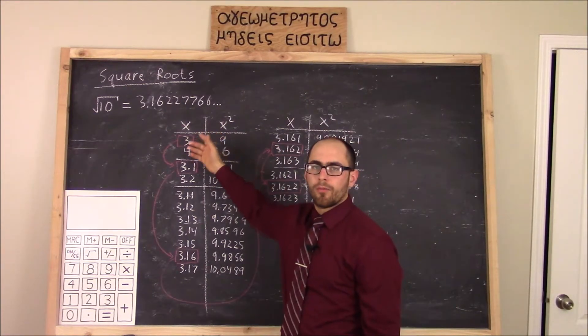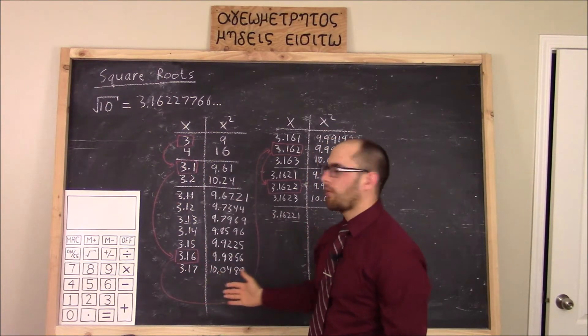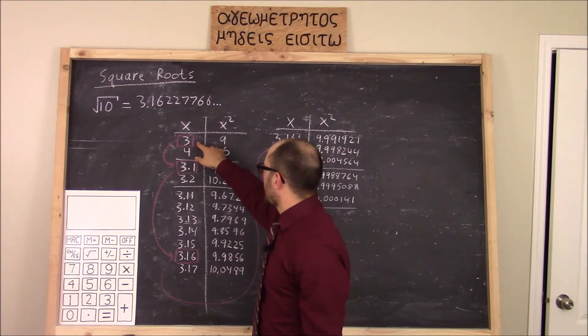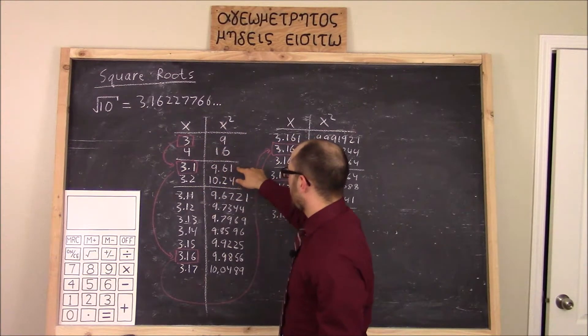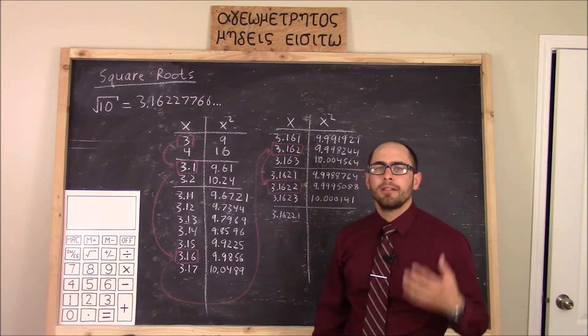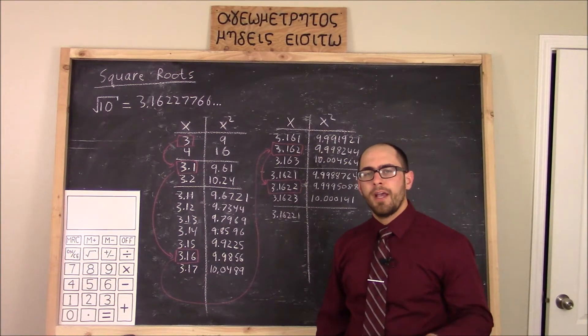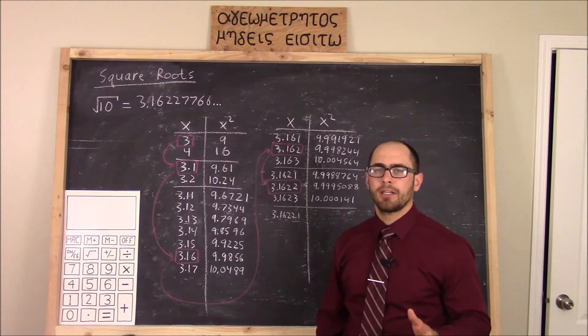I've added the color red to help guide your eyes through the process we are using. The box number indicates the value of x for which x squared does not exceed 10. Now this is all well and good and it displays an intuitive approach to root finding. In fact, it's very similar to the bisection method.